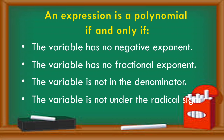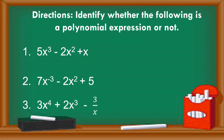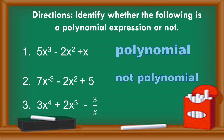Let us try to work on with the examples. We are going to identify whether the following is a polynomial expression or not. The first example is polynomial — pasok naman sya sa mga kondisyon. Not polynomial — because of the negative exponent, bawal magkaroon ng negative exponent. The third is also not polynomial kasi bawal din ang fractional exponent at ang variable na nasa denominator.